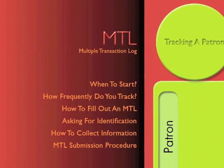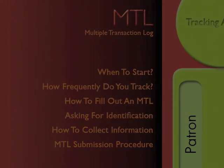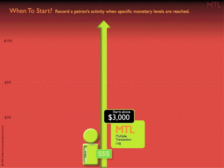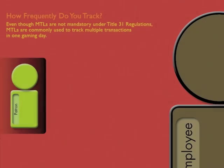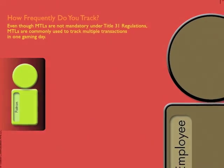In this section, we're going to go over when to start, how frequently we track, and how to fill out an MTL, when the threshold level starts above $3,000. $3,000 and one penny initiates an MTL. Even though MTLs are not mandatory under Title 31 regulations, MTLs are commonly used to track multiple transactions.